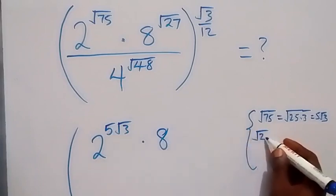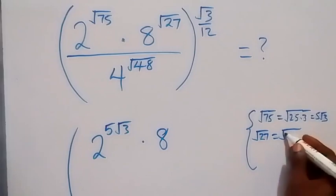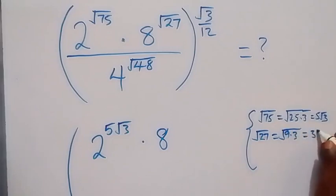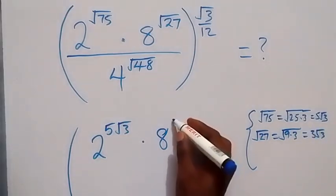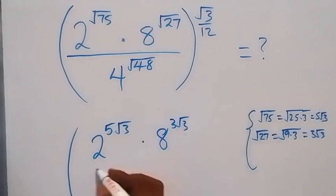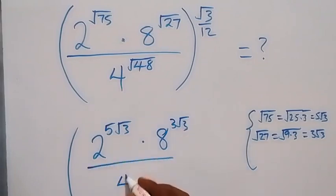Then times 8 raised to power root 27. We can write that as root 9 times 3, and root 9 is 3, which gives 3 root 3. So that's 8 raised to power 3 root 3.